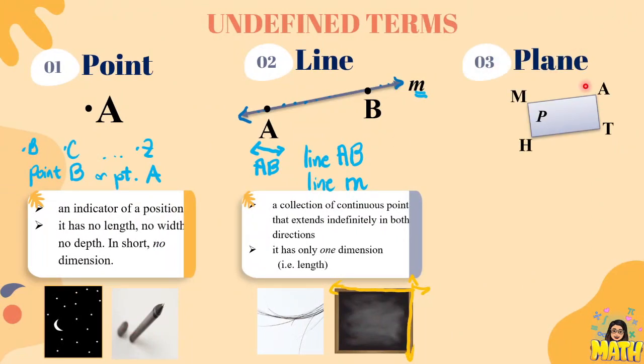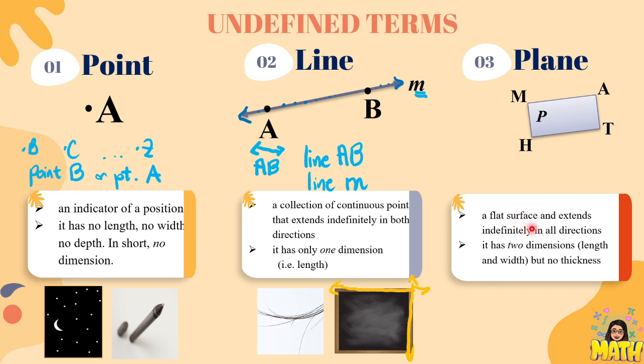And the last undefined term that we have is what we call the plane. A plane is a flat surface and extends indefinitely in all directions. So here, you can see a plane which looks like a rectangle but it actually extends indefinitely in both directions and we simply use four points around it.